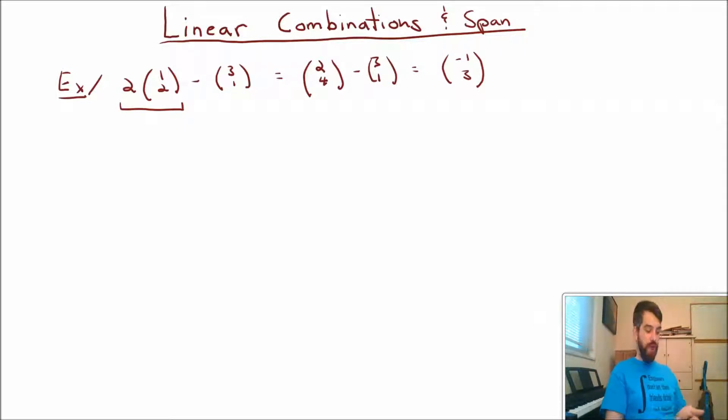But now I want to look at how do I view this thing? This thing I'm referring to as a linear combination, where I'm doing combinations of either scalar multiplications or vector additions. How do I view that geometrically?